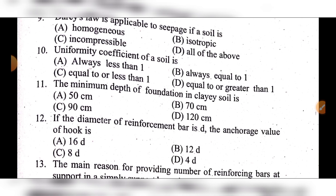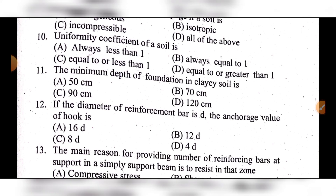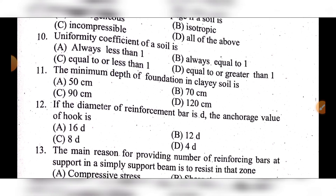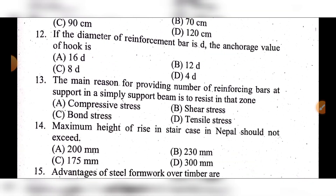Question 12: If the diameter of a reinforcement bar is D, the anchorage value of a hook is — option A: 16D, option B: 12D, option C: 8D, option D: 4D. The answer is option A: 16D.